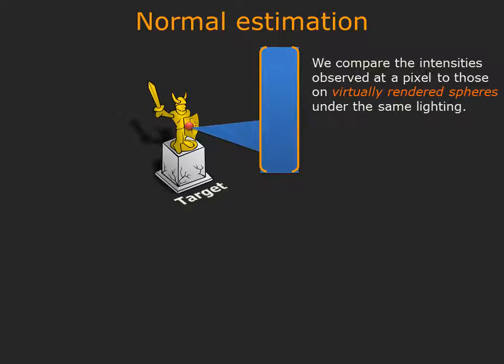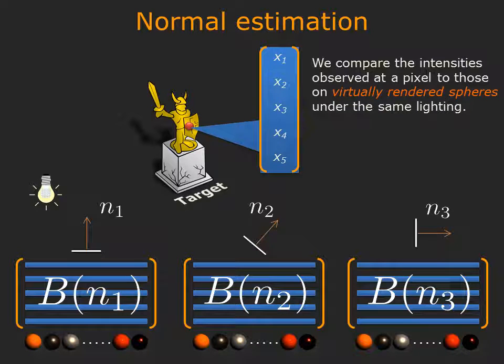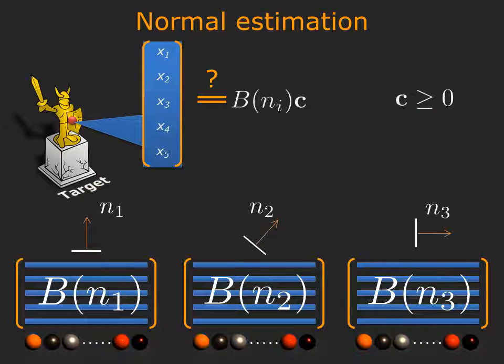We compare the intensity observed at a pixel for varying lighting to the pre-rendered matrices associated with different candidate normals. Specifically, we check if the observed intensities lie in the non-negative span of the matrices associated with each candidate normal. The candidate normal that produces the best match to the observed intensities provides an estimate of surface normal at that pixel.